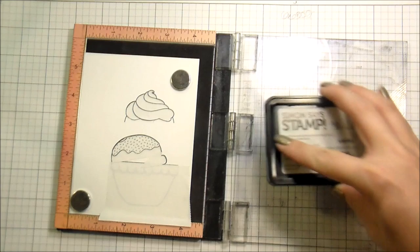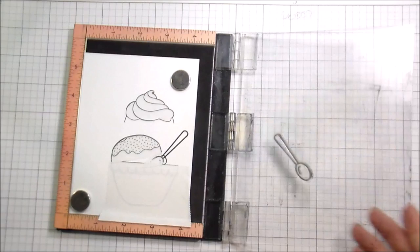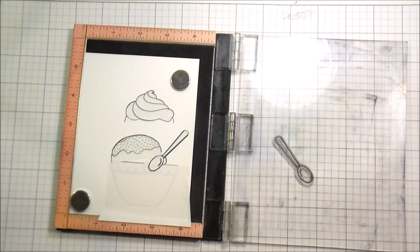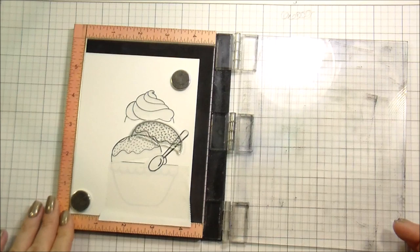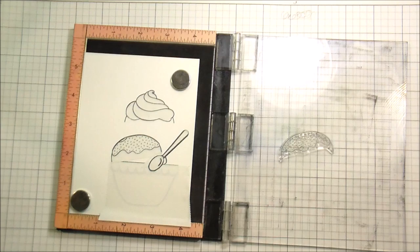I actually wanted to put candles and cherries on top of my ice cream, and I should have stamped those first. What you want to see the most of, you stamp first, then you mask those items and stamp your background items progressively until you get the part that you'll see the least of. I was so excited about making the ice cream that I forgot to do that part.